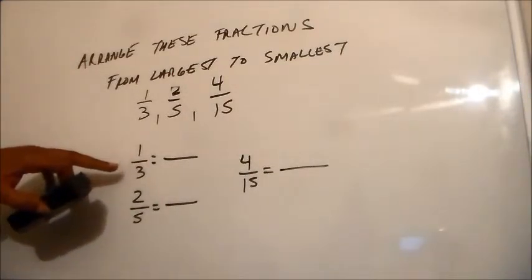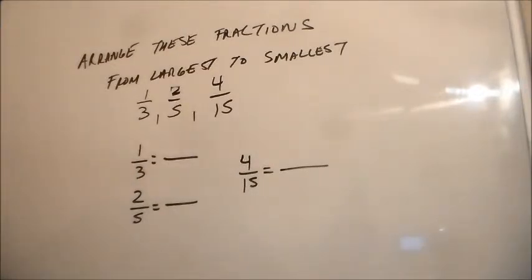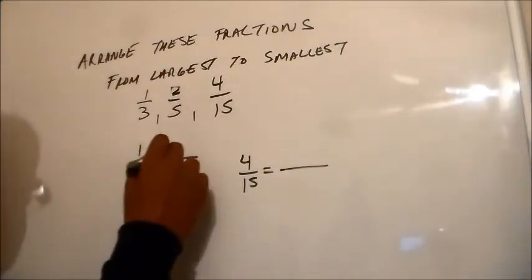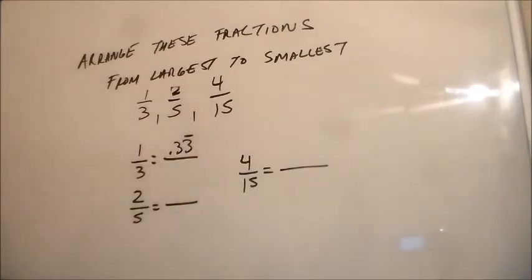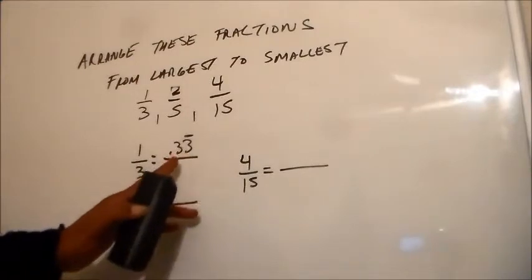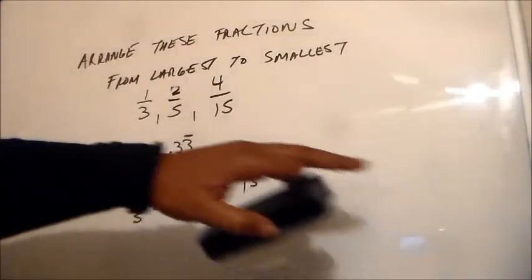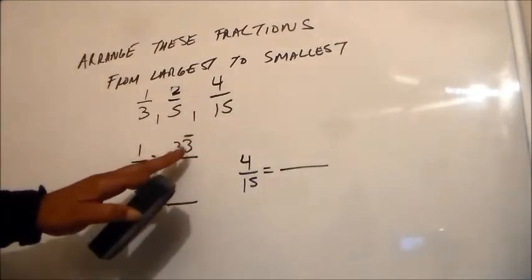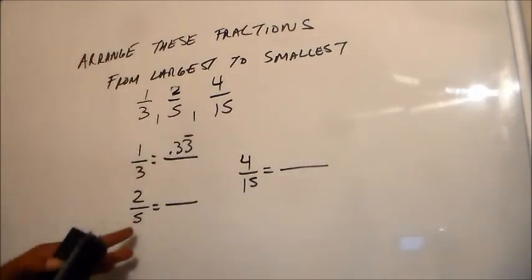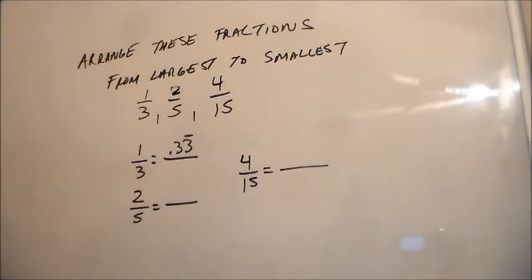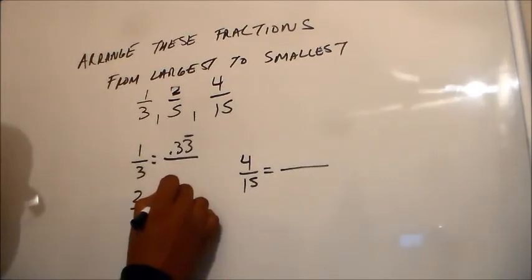How do we come up with the decimals? Easy — we divide the numerator by the denominator. So one divided by three: I said 0.33, and yes it's 0.33, and it's actually a repeating decimal, 0.3333 repeating, but just use 0.33. The next one I said about forty percent or 0.40 — two divided by five equals exactly 0.4.